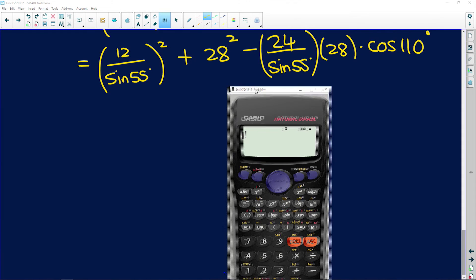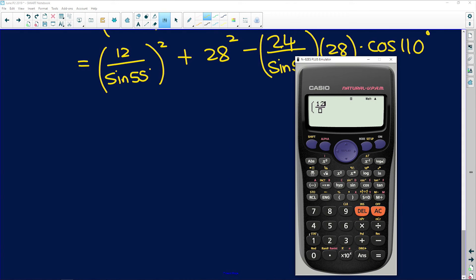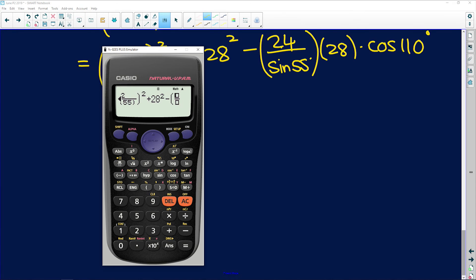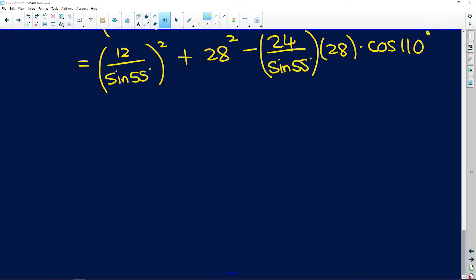So we have—just type it exactly the way you have it written. So 12 divided by sine of 55 degrees, close brackets, all squared, plus 28 squared, minus—we have 24 over sine of 55 degrees, close brackets, into 28 times cos of 110 degrees. Okay, that is going to give us 1279.18, etc. Don't round off yet.